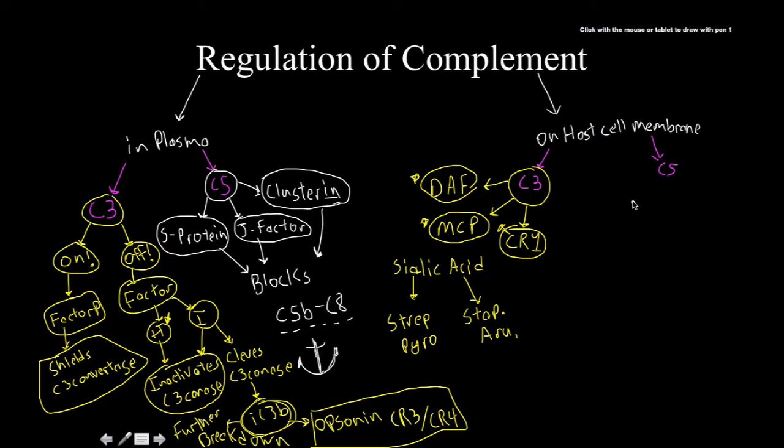So the last thing that I wanted to talk about for regulation of complement on the host cell membrane is C5. So the way that we can regulate C5 activity on the host cell membranes is by means of something called homologous restriction factor. And a molecule called protectin, sometimes known as CD59.